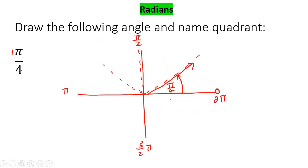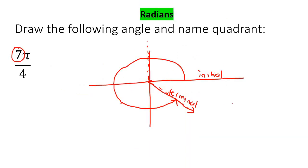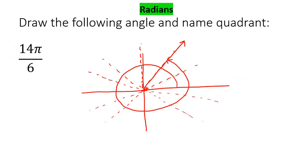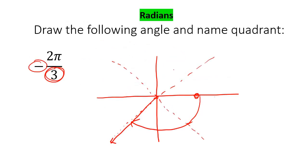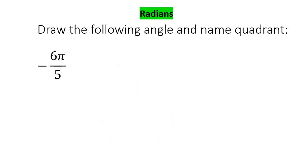I haven't been naming the quadrants. So this was quadrant one, this was quadrant number four, this is quadrant number one where it lands up, this is quadrant number two, and this is quadrant number three.